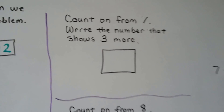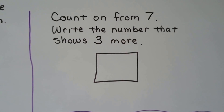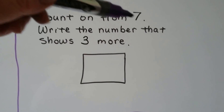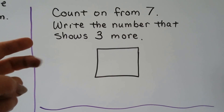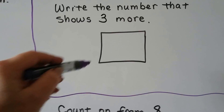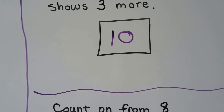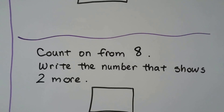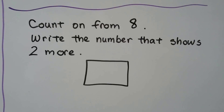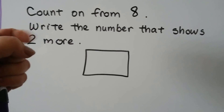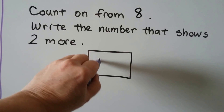Count on from 7 — write the number that shows 3 more. We start with 7 and count on 3: 7, 8, 9, 10. Count on from 8 — write the number that shows 2 more: 8, 9, 10. That's also 10.